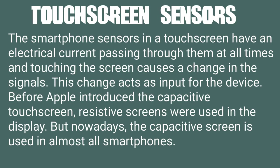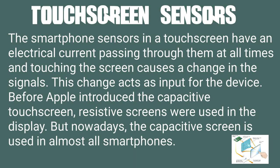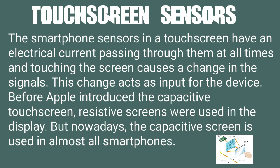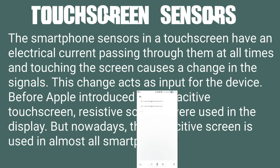Touchscreen Sensors — the smartphone sensors in a touchscreen have an electrical current passing through them at all times, and touching the screen causes a change in the signals. This change acts as input for the device. Before Apple introduced the capacitive touchscreen, resistive screens were used in the display. But nowadays the capacitive screen is used in almost all smartphones.